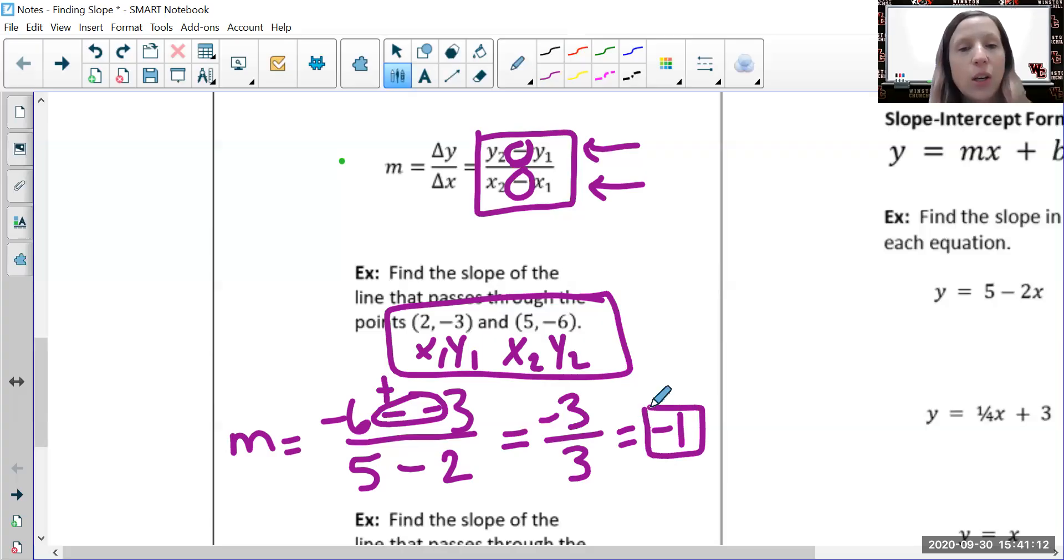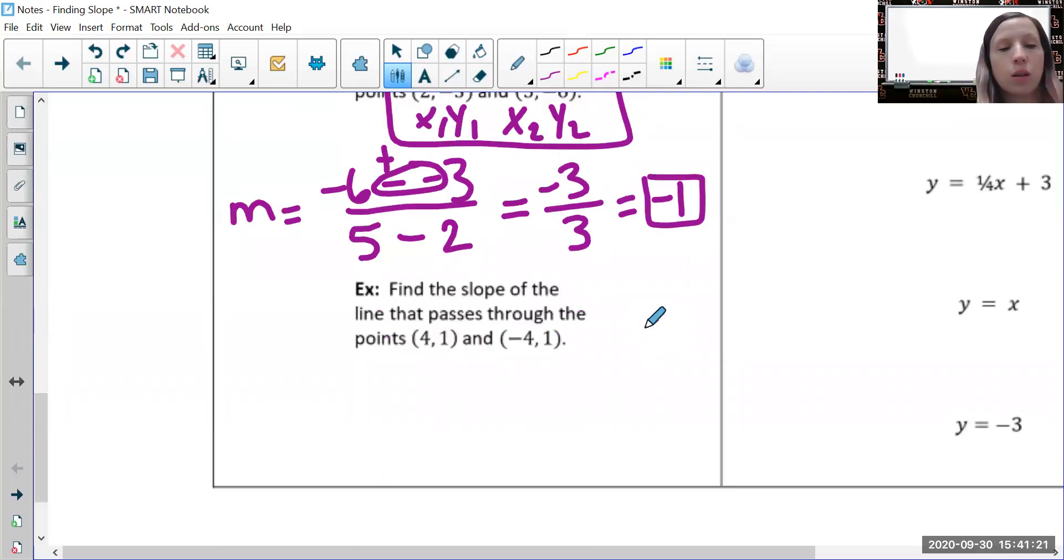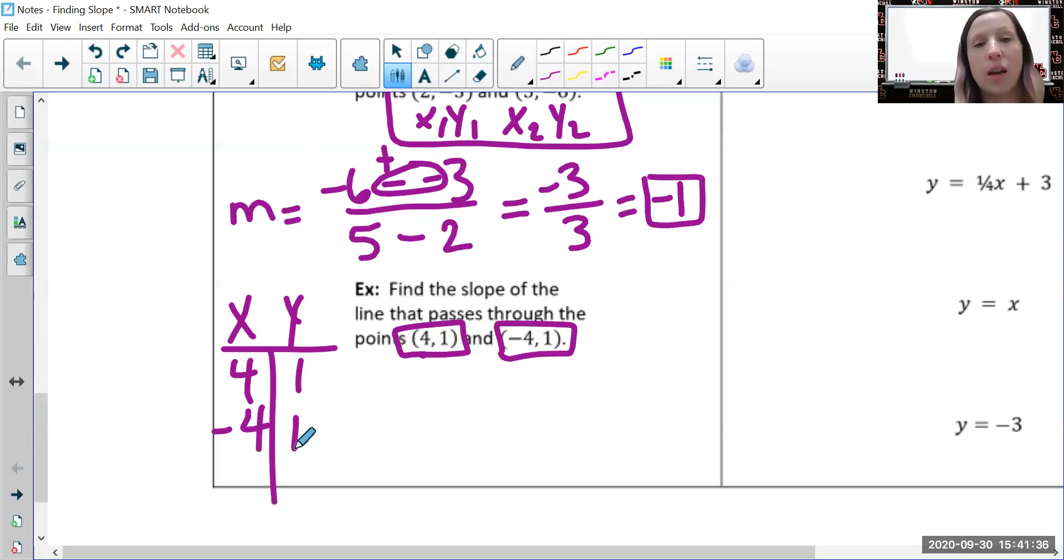If you don't like using that formula, you could put your points in a table. For instance, each of these points I could put in the table: (4, 1) and (-4, 1).